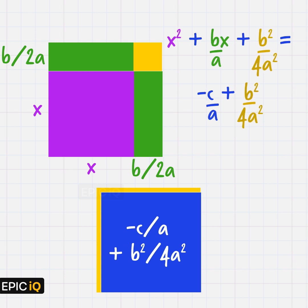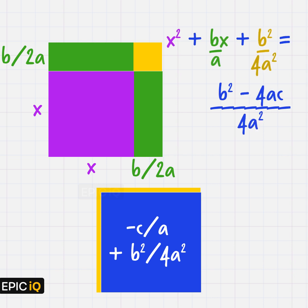We add these terms on both sides of the equation. We can simplify the area on the right-hand side as (b² - 4ac)/4a².